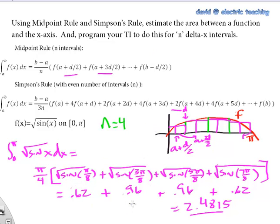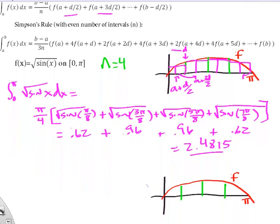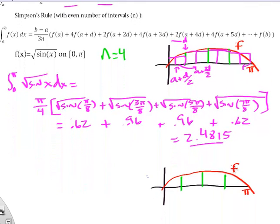We've already showed the midpoint rule for the approximate area underneath the curve, square root of sine of x. The midpoint rule uses the heights of four rectangles here. I'm going to use the Simpson's rule now to try to give an explanation of why that rule is sometimes a better approximation.